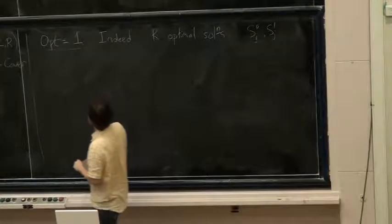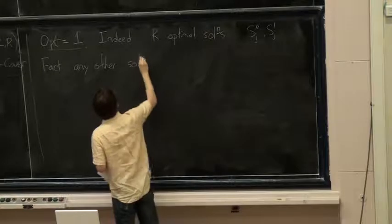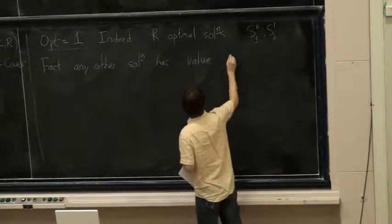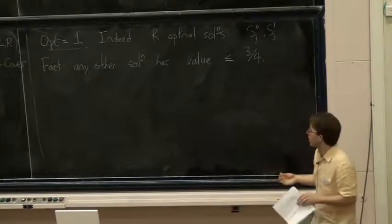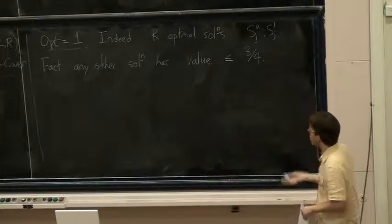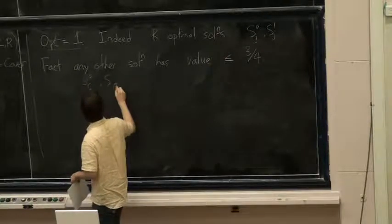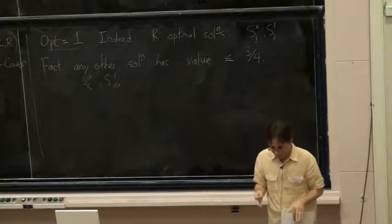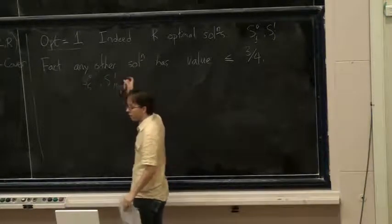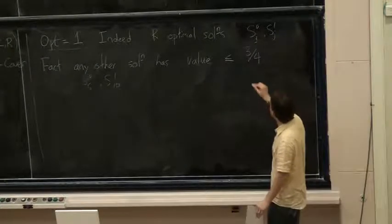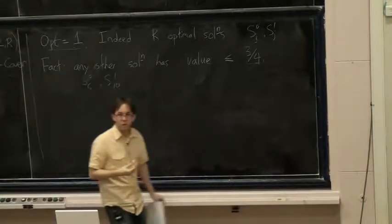We can also observe that any other solution — taking two sets not corresponding to the same coordinate — has value at most 3/4. For example, taking S_{5}^0 and S_{10}^1 covers all strings with a 0 in the 5th coordinate or a 1 in the 10th coordinate — that's 3/4 of the strings; you miss those with a 1 in the 5th and a 0 in the 10th. It's no coincidence that these values of 1 and 3/4 will be the basis of our construction.